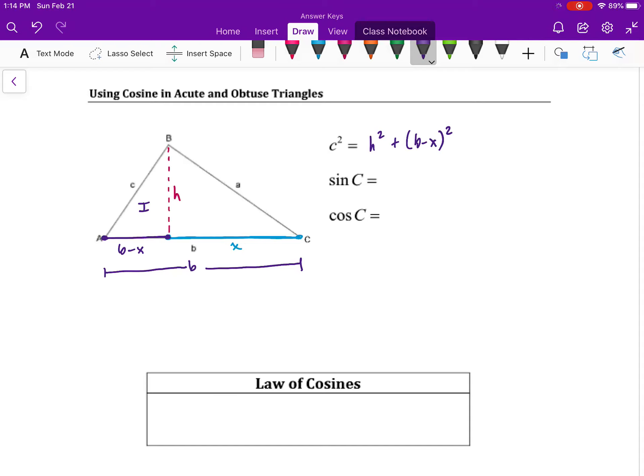Next, we're going to write expressions for sine and cosine of angle C. Sine of C, much like we did with the last rule, H over A. And cosine of C, X over A. And this is why we defined that new variable X.